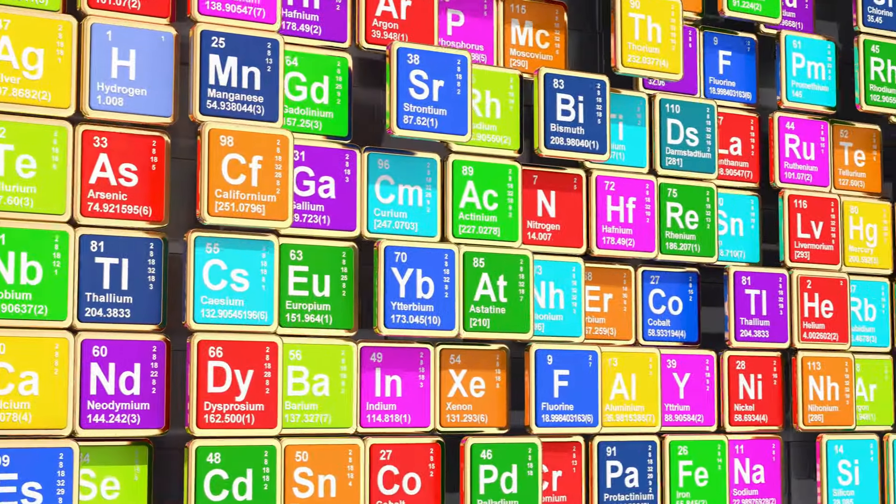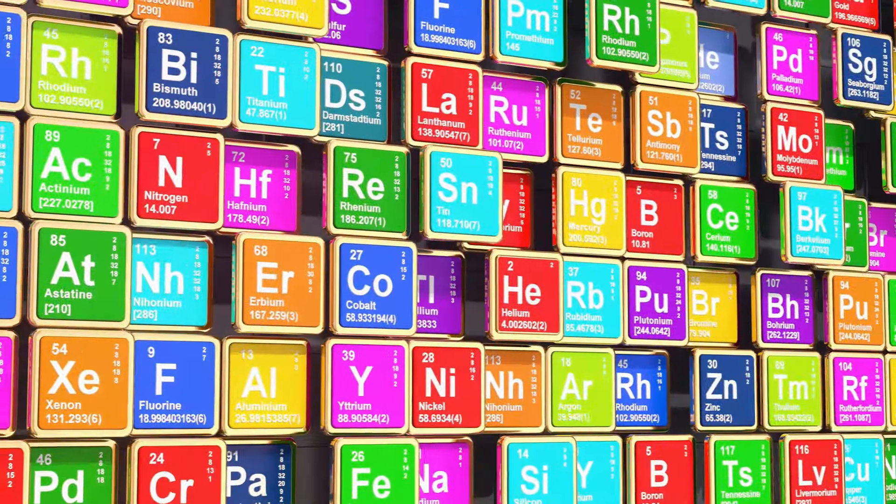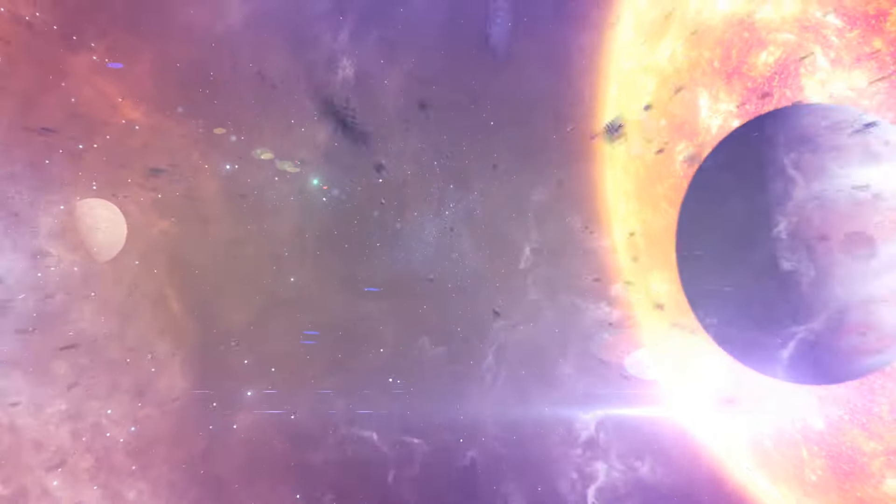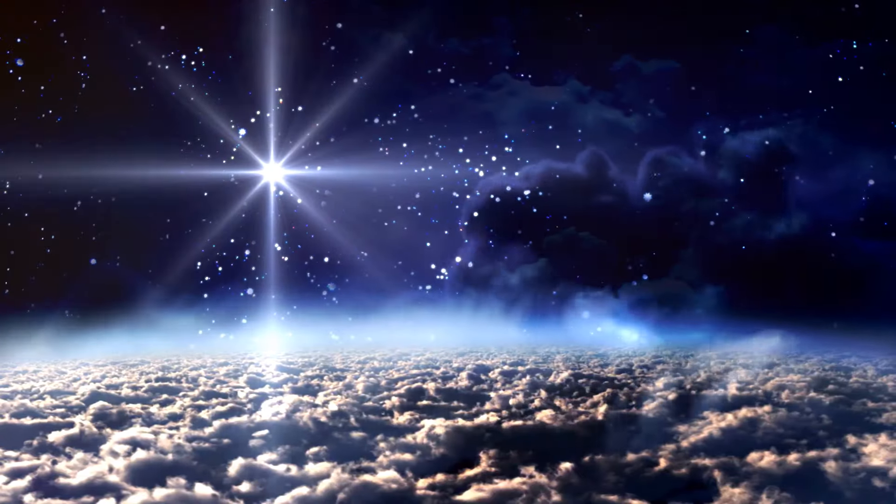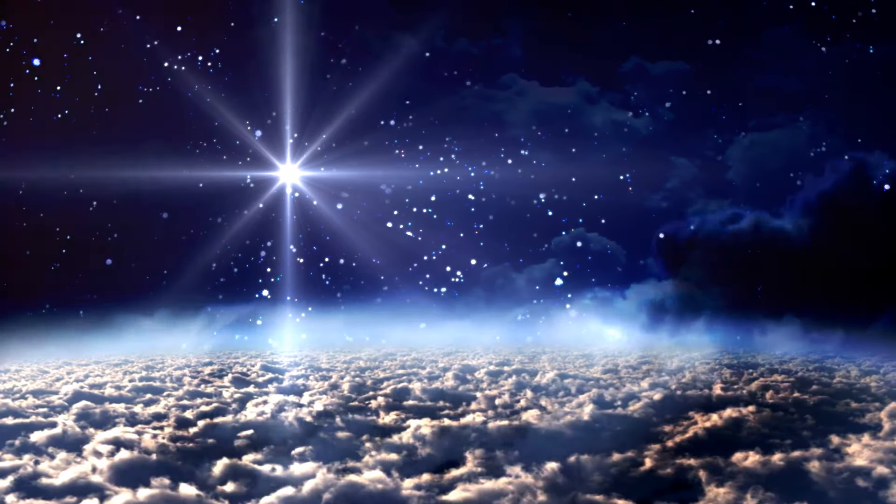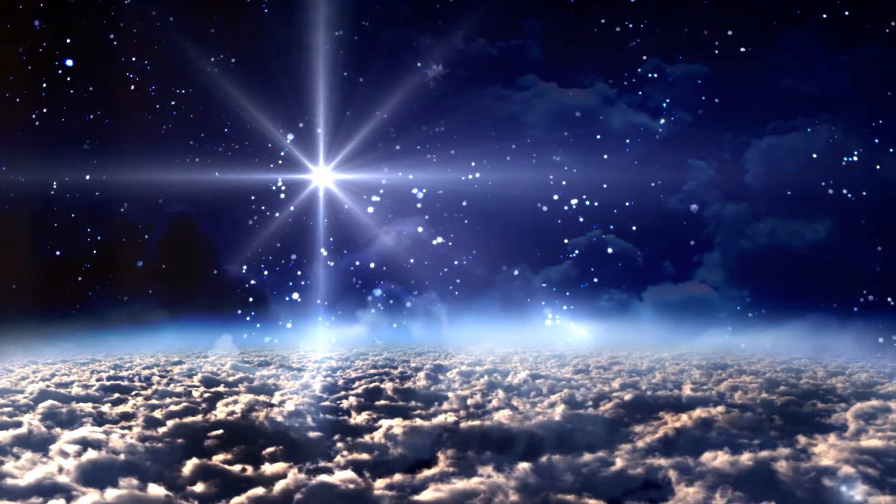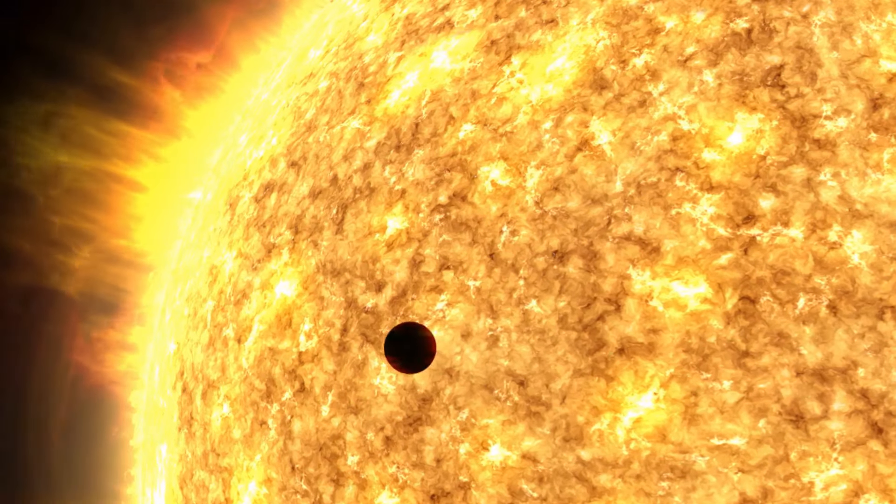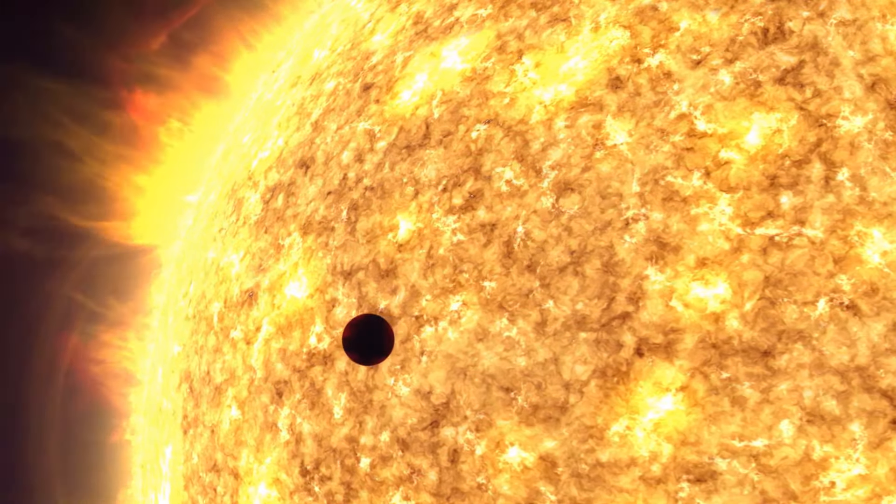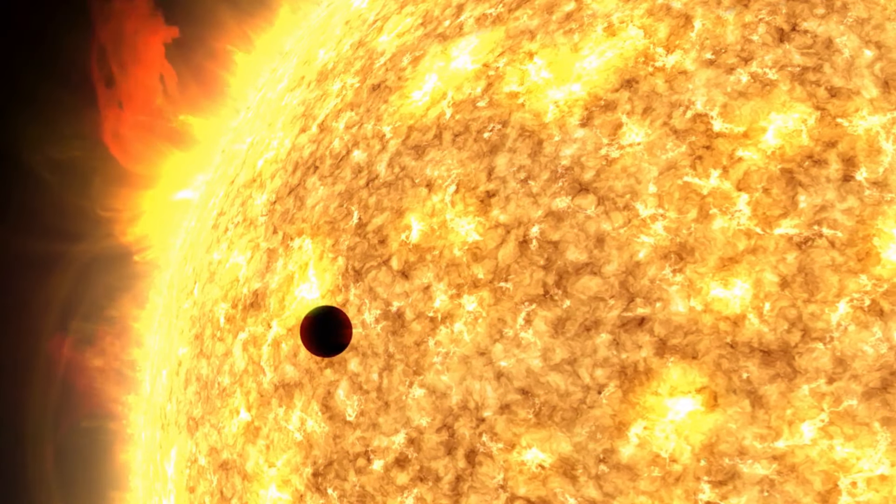But the cosmic dance doesn't end with the creation of elements. It continues with the formation of solar systems. Our own solar system, for example, was born from a swirling cloud of gas and dust, enriched by previous generations of stars. This protoplanetary disk eventually gave rise to the sun and its family of planets, including Earth.